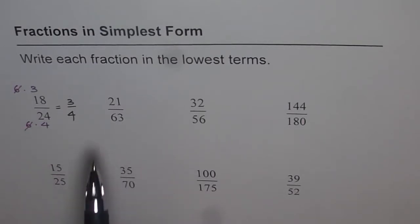Now we will use different technique this time. For the second question, we want to write 21 over 63 in terms of lowest fractions. So what we will do is, we will divide both numerator and denominator by their common factors.